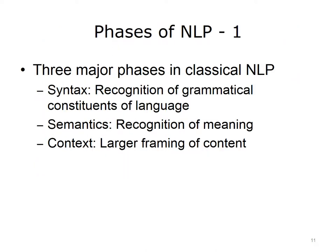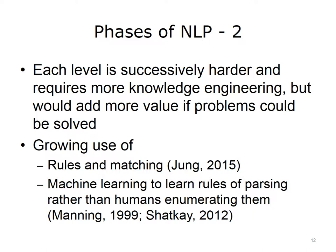The classic approach to NLP goes through three phases. The first phase is syntax, where we attempt to recognize the grammatical constituents of language — sentences, phrases within them, and down to nouns, verbs, adjectives, etc. The next phase is semantics, where we attempt to recognize the meaning of those words, phrases, and sentences. Finally is the context in which the sentence occurs. Each of these levels is successively harder and requires more knowledge engineering, but would add more value if we could solve those problems.